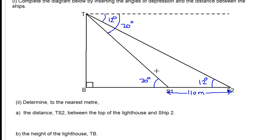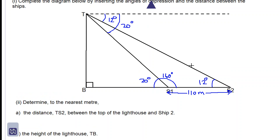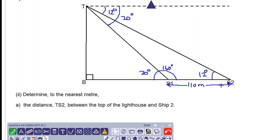Remember that alternate angles are equal and we therefore know that this angle will be 180 subtract 20 which is 160 degrees, since both of these angles lie on a straight line and a straight line has 180 degrees. Let's look at the distance between the top of the lighthouse and ship 2 or S2.